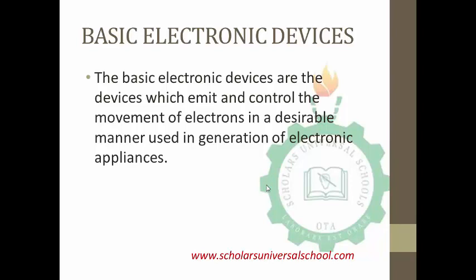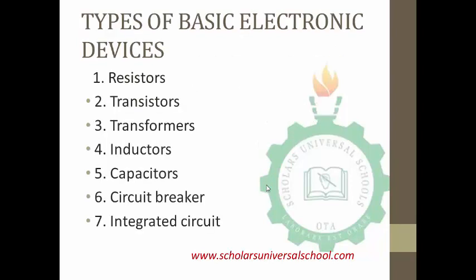Firstly, we define what basic electronic devices are. Basic electronic devices are the devices which emit and control the movements of electrons in a desirable manner, used in the generation of electronic appliances. Most of the electronic appliances we have in our homes — ranging from our television sets, our laptops, our monitors — they all have a board with tiny devices, and those devices are known as the basic electronic devices.